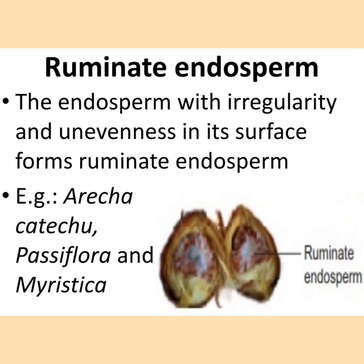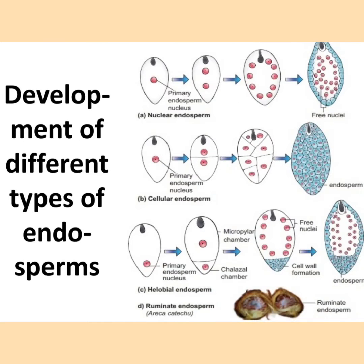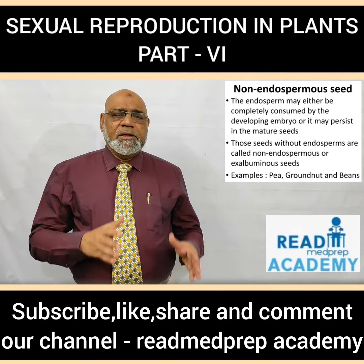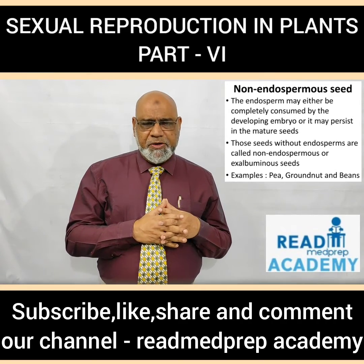Ruminate endosperm has irregularity and unevenness on its surface. Examples include Areca catechu, Passiflora, and Myristica. In the developmental diagram: nuclear endosperm shows no cell wall formation with multiple nuclei; cellular endosperm shows each nuclear division followed by cell wall formation giving a multicellular structure; helobial endosperm has a nuclear micropylar part and a cellular chalazal part; and ruminate endosperm, seen in Areca catechu, has an irregular surface.